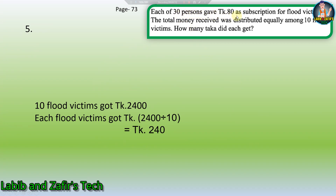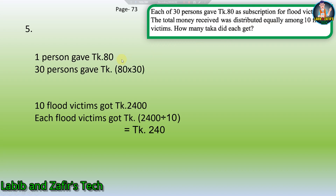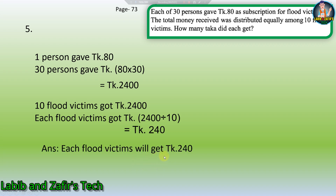Fifth word problem: each of 30 persons gives Taka 80 as subscription for flood victims. The total money is distributed equally among 10 flood victims. How much does each get? 30 persons × Taka 80 = Taka 2400. Ten flood victims got Taka 2400, so each flood victim gets 2400 ÷ 10 = Taka 240. Each flood victim will get Taka 240.